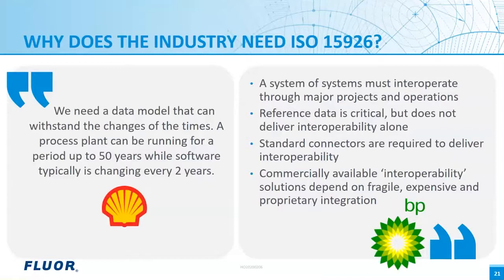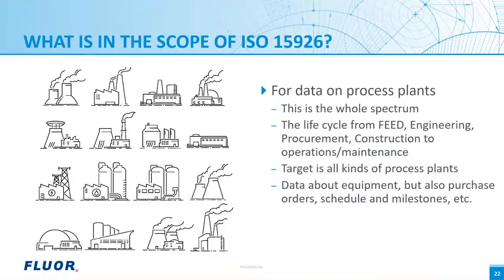ISO 15926 has a modeling methodology to go with the reference data. Commercially available interoperability solutions depend on fragile, expensive, and proprietary integration. The scope of ISO 15926 is very big — all of the data life cycle from FEED, engineering, procurement, construction, and operation/maintenance — meaning equipment suppliers, software companies, EPC contractors, and owner-operators. This covers all types of process and power plants and upstream oil and gas, and all data needed for engineering, procurement, and construction, including equipment, purchase orders, schedule, and milestones.